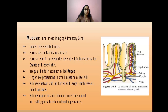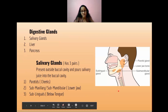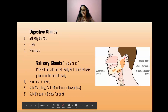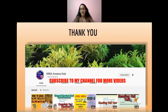There are three types of digestive glands: the salivary glands, the liver, and the pancreas. The salivary glands have three pairs present outside the buccal cavity and pour saliva into the buccal cavity. The parotid gland is the cheek gland. Then comes the submaxillary or submandibular gland, which is near the lower jaw. Then comes the sublingual gland, which is below the tongue.